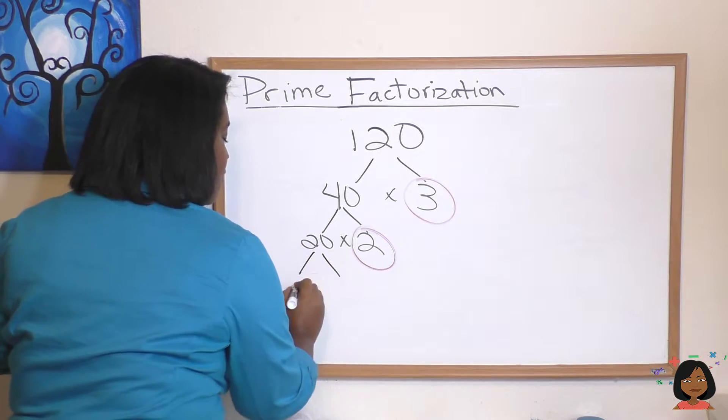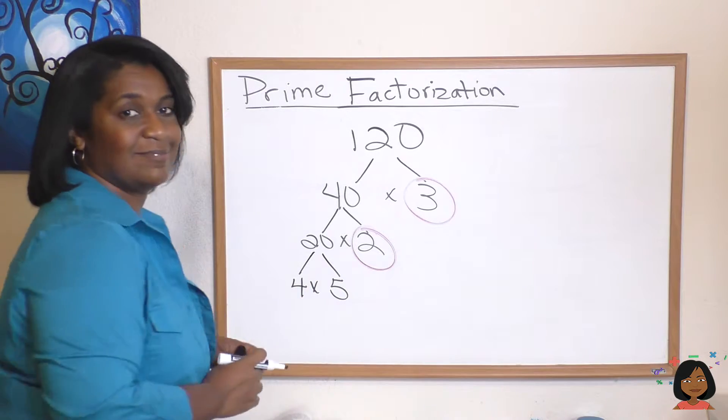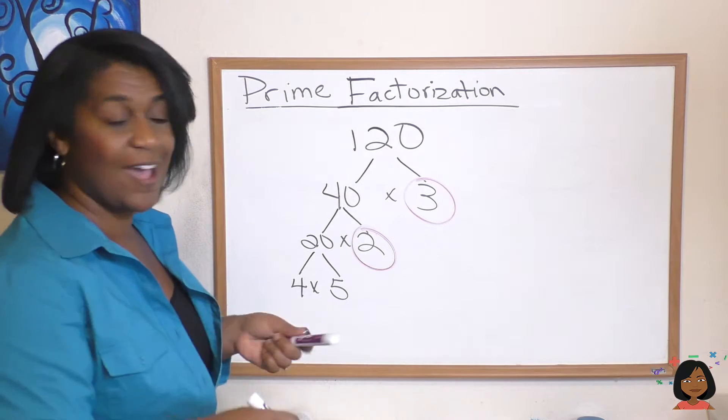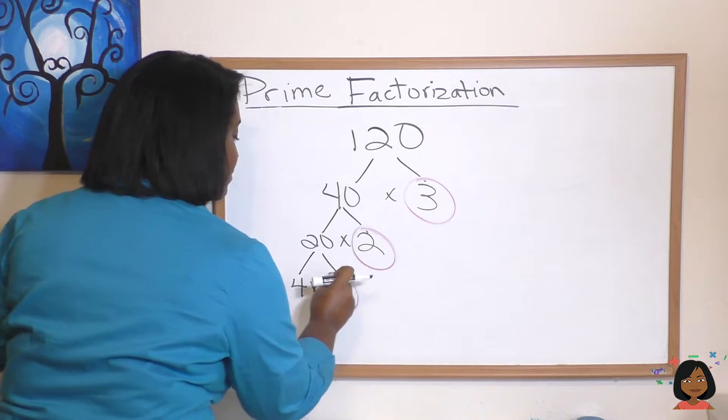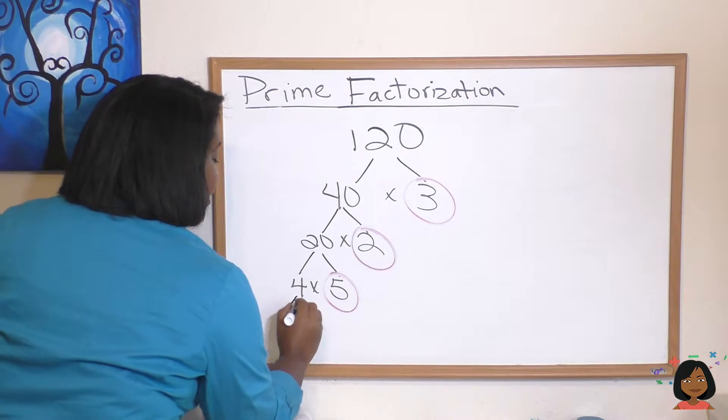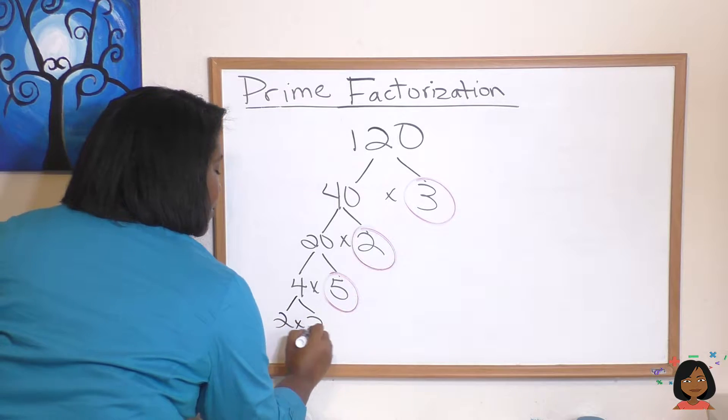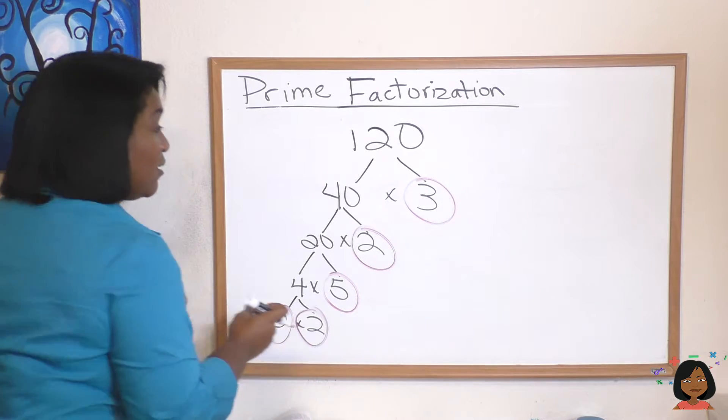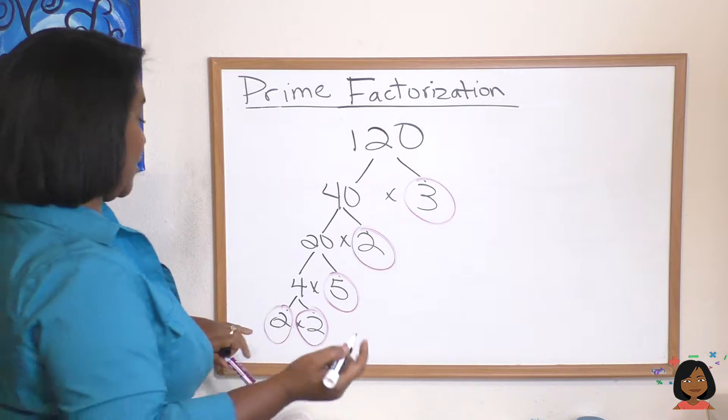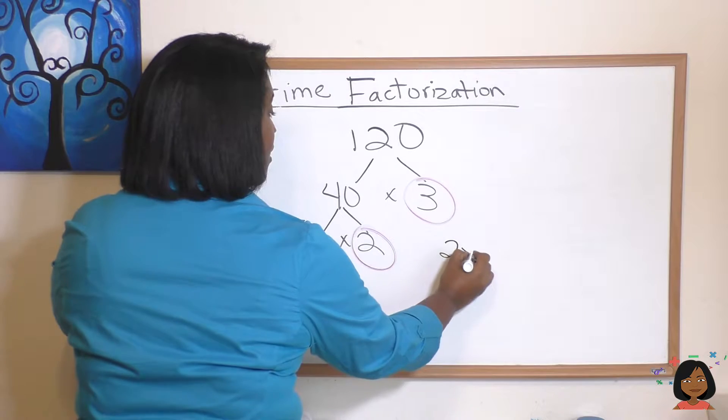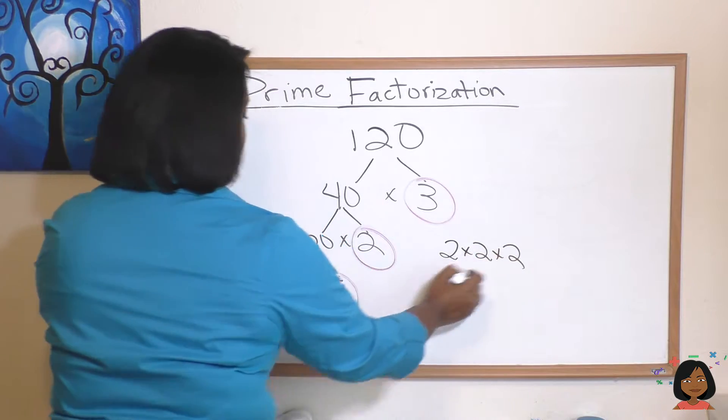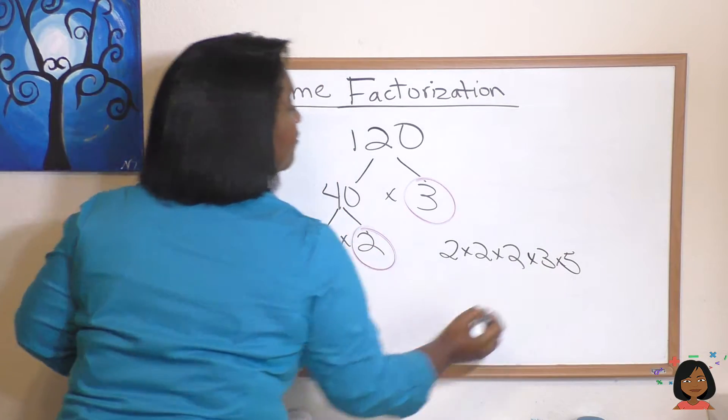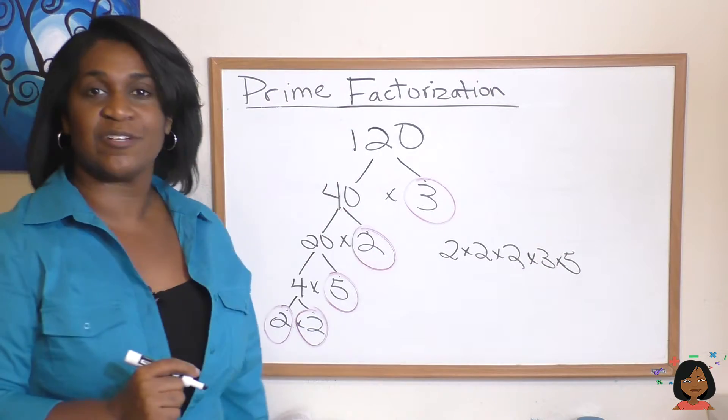How about 4 times 5 for the 20? Is 4 prime? Nope. So we'll keep going on the 4. But 5 is prime. So I'm going to circle it. And we know that 4 is the same thing as saying 2 times 2. And we already know that 2 is prime. So guess what? We are done. All there is to do is now to write it. We have 2 times 2 times 2 times 3 times 5. That is the prime factorization for 120.